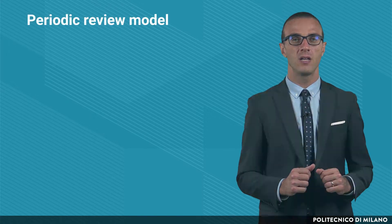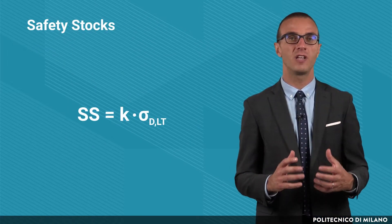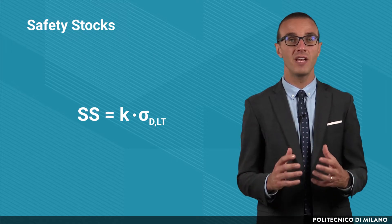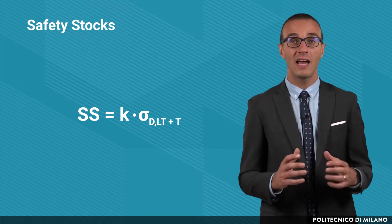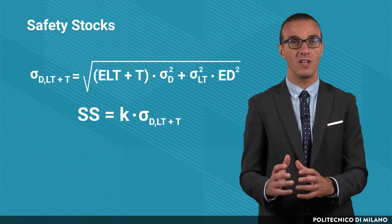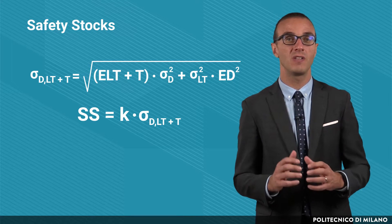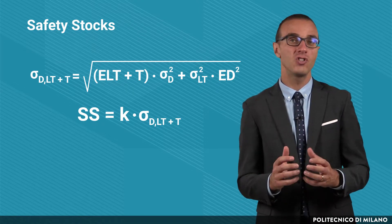Now we will see how things change if we consider the periodic review model. In this case, safety stocks cope with the uncertainty of the demand during both the lead time and t, where t is the time between two consecutive orders. What changes with respect to the reorder point model is that the standard deviation to be considered is the standard deviation of the demand during t plus L, and not only the one during the lead time. As a consequence, when computing this standard deviation, the factor by which the standard deviation of the demand is multiplied is the sum of the expected lead time and t, and not just the expected lead time.